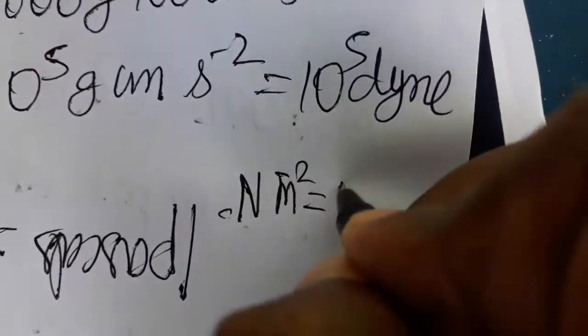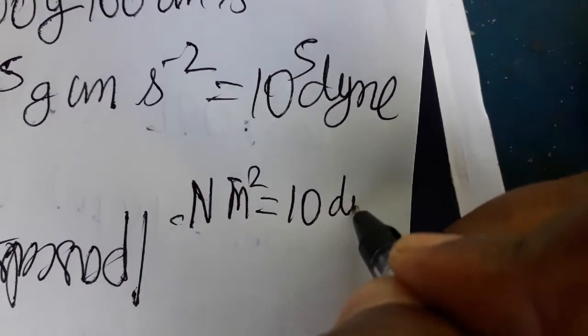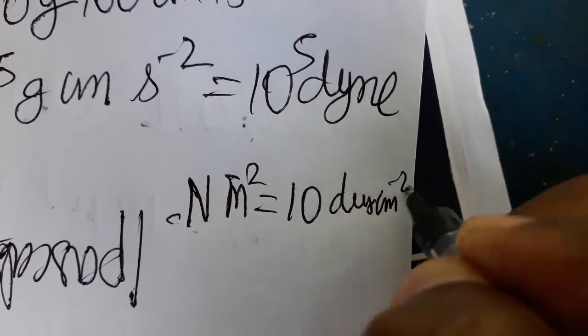So today we learned Newton meter square is equal to one Newton meter square is equal to meter minus two is equal to ten times of dyne centimeter minus two. Thank you.